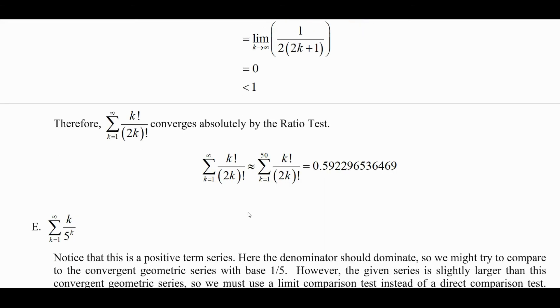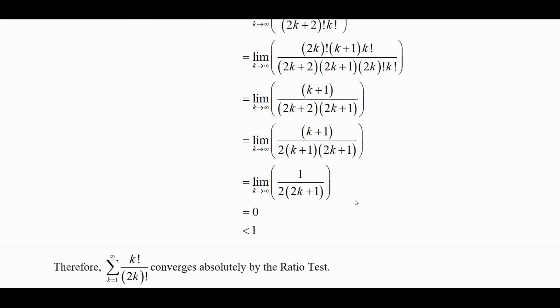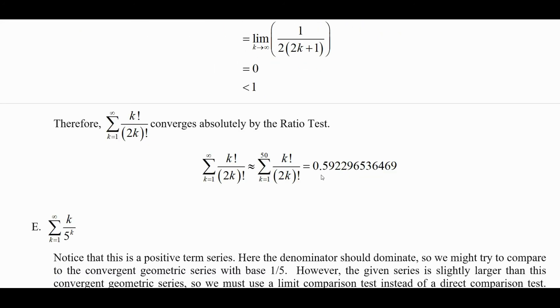Adding up the first 50 terms using a calculator gives approximately 0.5922965.